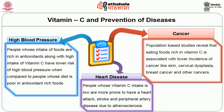The DASH diet, which is recommended for preventing high blood pressure, includes generous amounts of fruits and vegetables, which are good sources of antioxidants. Intake of vitamin C along with conventional blood pressure-lowering medications lowers systolic blood pressure but does not have an effect on diastolic pressure.